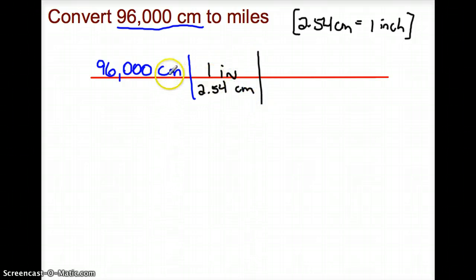Now notice, I placed it specifically so that the centimeters would cancel out. If I had written it so that 1 inch was in the denominator and 2.54 centimeters was in the numerator, my units would be square centimeters over inches, which is not what I want. In this case, the centimeters cancel out and if I left it like this, I would have converted to inches. However, I want to go to miles.